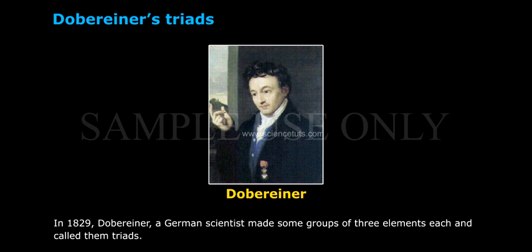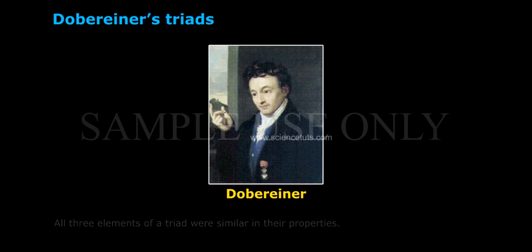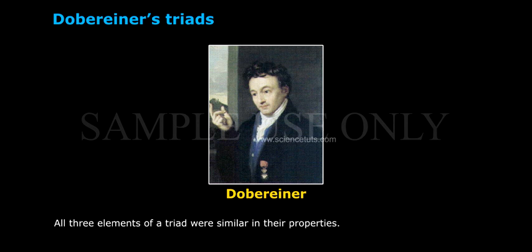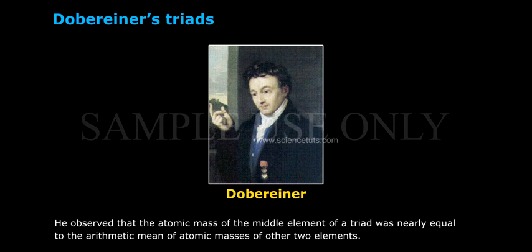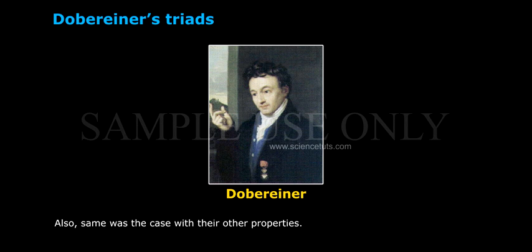In 1829, Döbereiner, a German scientist, made some groups of three elements each and called them triads. He observed that the atomic mass of the middle element of a triad was nearly equal to the arithmetic mean of the atomic masses of the other two elements. The same was also the case with their other properties.